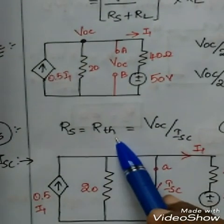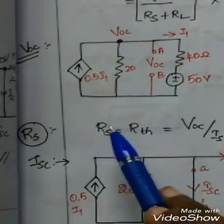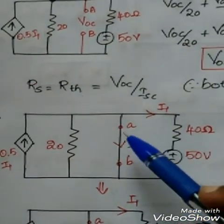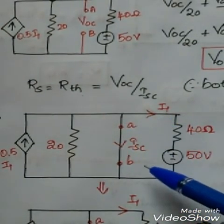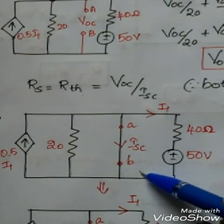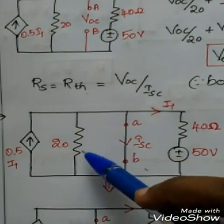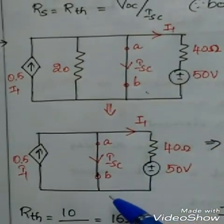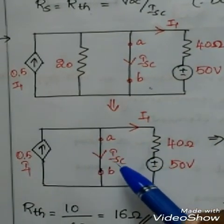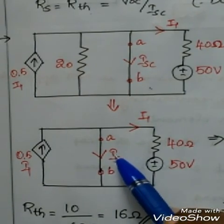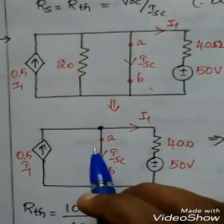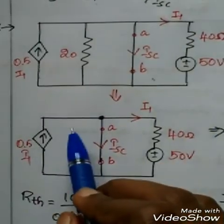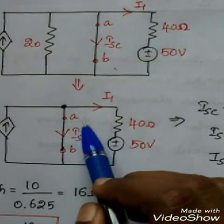What is the value of IAC? Rth will be equal to VOC divided by IAC — VOC is already found. IAC is our short circuit current. Just short circuit the branch AB and find the value of current in that branch. Short circuiting this branch makes the potential across it 0, so the parallel 20-ohm branch also has potential 0 and is also short circuited. We combine both short circuit branches into a single short circuit branch. Applying KCL at this node: 0.5 I1 is incoming current. The outgoing currents are IAC and I1.